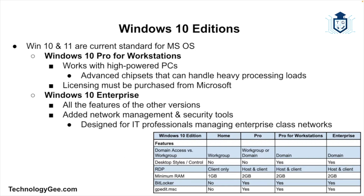The key differences between Pro and Pro for Workstations lie in the robustness and licensing. Pro for Workstations is designed to work with high-power computers with advanced chipsets that can handle heavy processing loads. Instead of using an OEM install, licensing must be purchased directly from Microsoft.